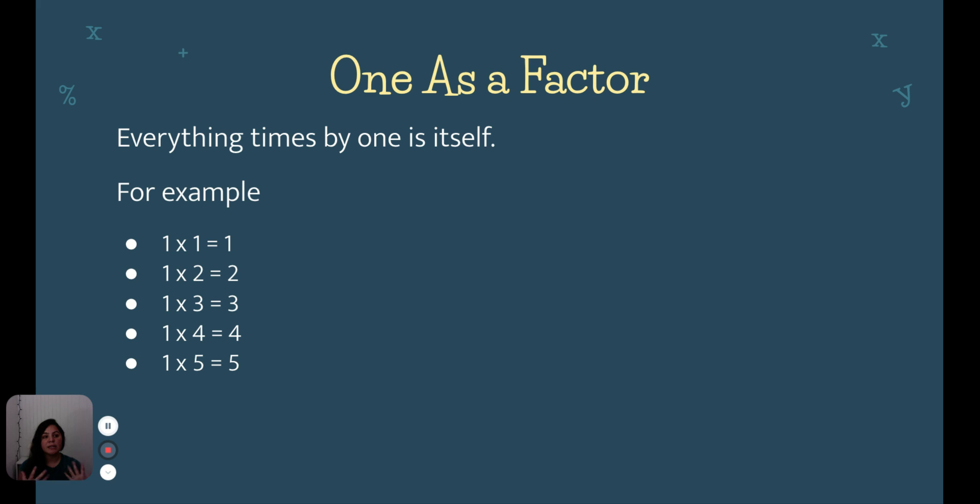So, zero times anything is always going to be zero, and one times anything is always going to be itself.